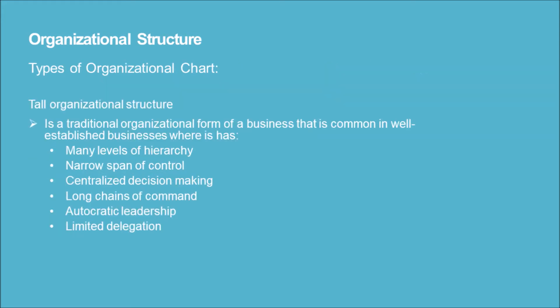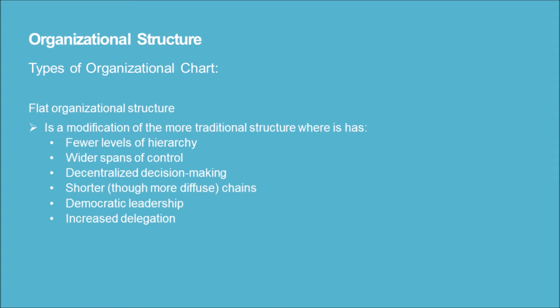Types of organizational charts: 1) Tall organizational structure — a traditional form common in well-established businesses. It features many levels of hierarchy, narrow span of control, centralized decision-making, long chains of command, autocratic leadership, and limited delegation. 2) Flat organizational structure — a modification of the traditional structure featuring fewer levels of hierarchy, wider spans of control, decentralized decision-making, shorter chains of command, democratic leadership, and increased delegation.